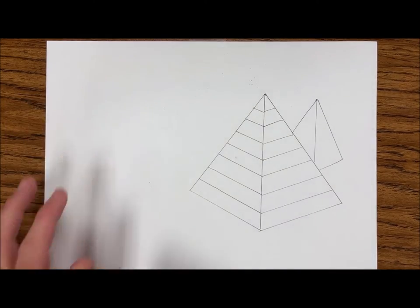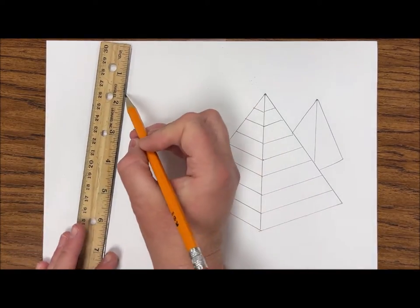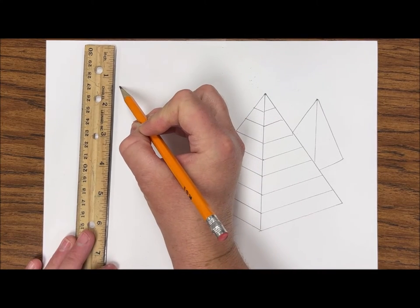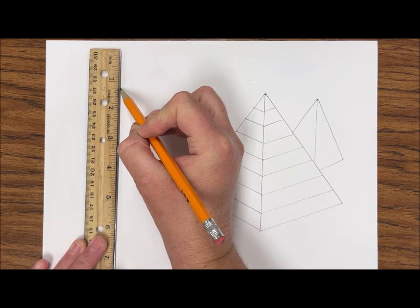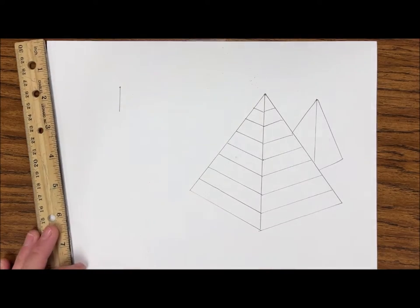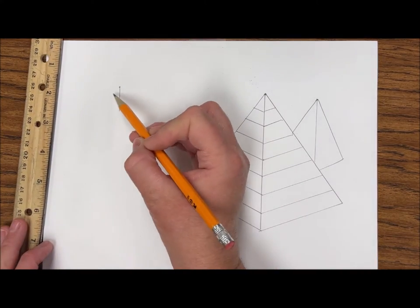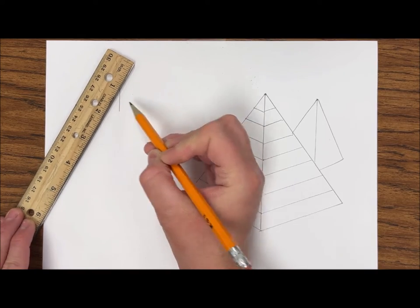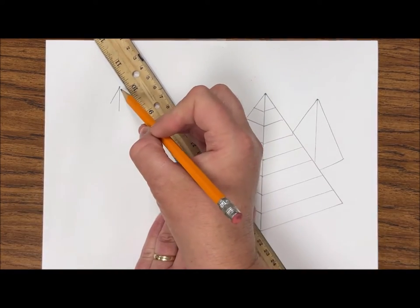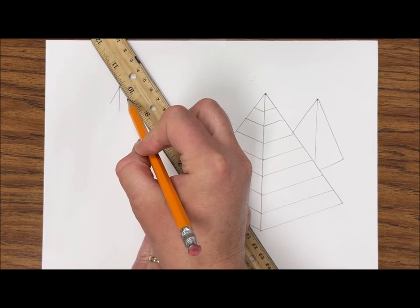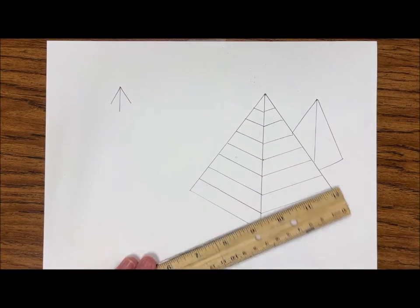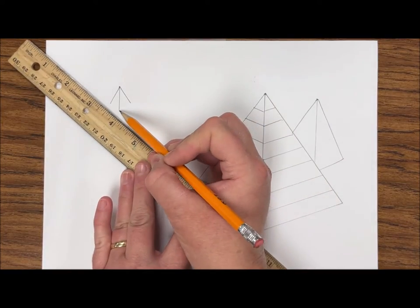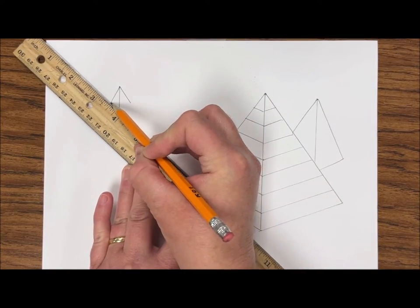I'm going to go ahead and do one more small one in the background here. It's going to be teeny tiny, but we'll follow the same steps: dot, vertical line, two diagonal lines that go out from the sides, again keeping those shorter than that middle line, and then again connecting just the same way we did on the bottom left and right.